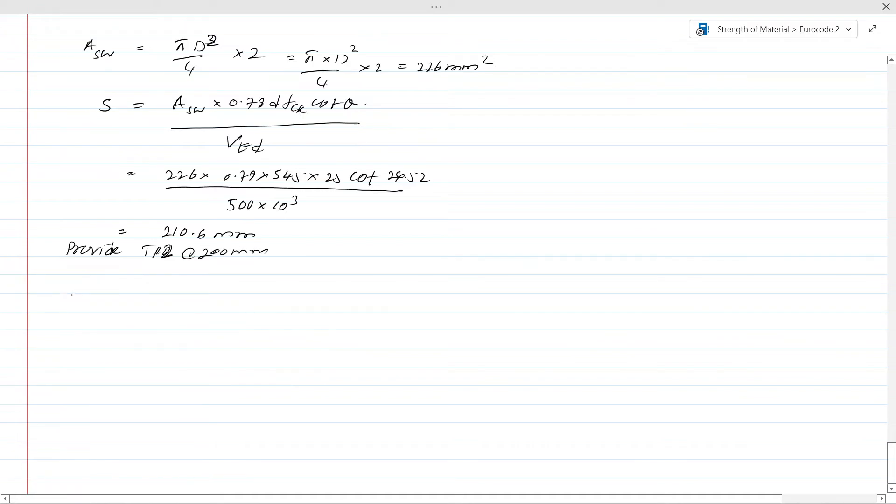Then we have to find the minimum shear reinforcement. Minimum shear reinforcement can be calculated from ρ_w,min = A_sw,min / (s × b_w) equals 0.08 × f_ck^0.5 / f_yk. Since we know all the values: area 226, spacing 200, 0.08 × √25 × 300 / 500. From this equation we can get s as 942mm. Then the provided spacing is 200mm, so this satisfies the requirement.